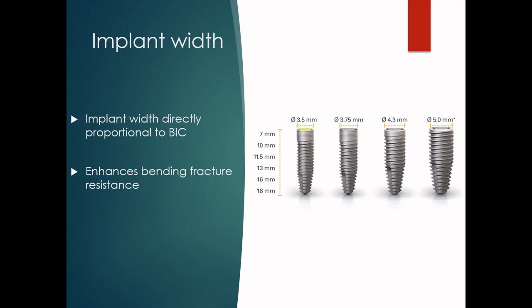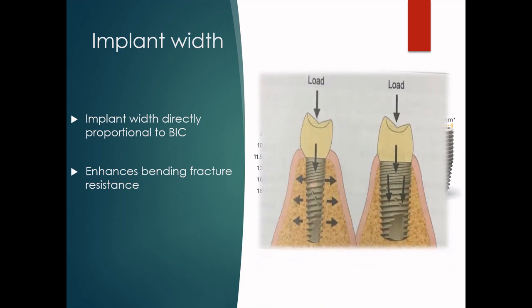Next is the implant width. An increase in implant width adequately increases the area over which occlusal forces may be dissipated. Implant width is directly proportional to the bone-implant contact area. Wider diameter implants enhance bending fracture resistance. However, crestal bone anatomy often constrains implant width to less than 5 mm because of the stress shielding effect — that is reduction in bone density as a result of removal of normal stress from bone by an implant.